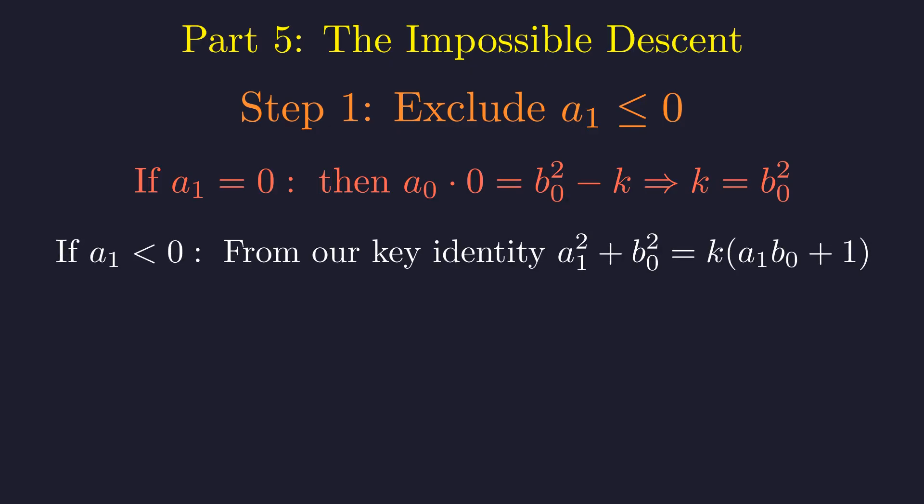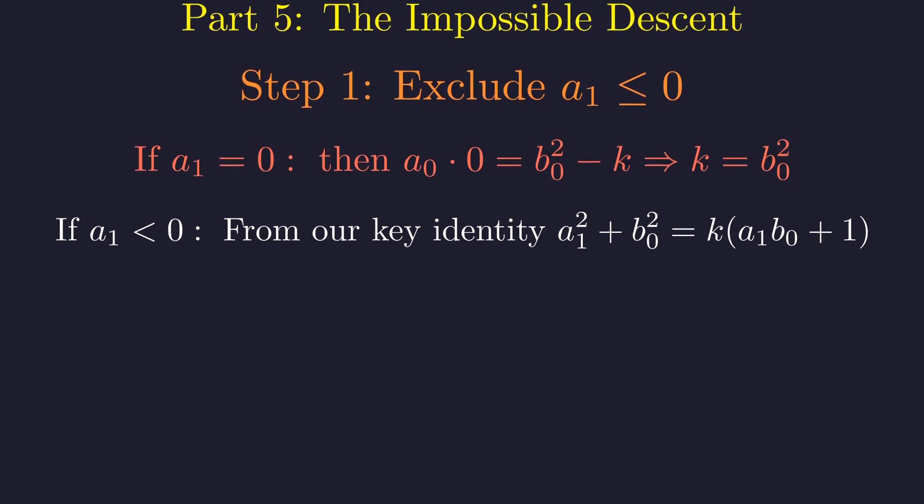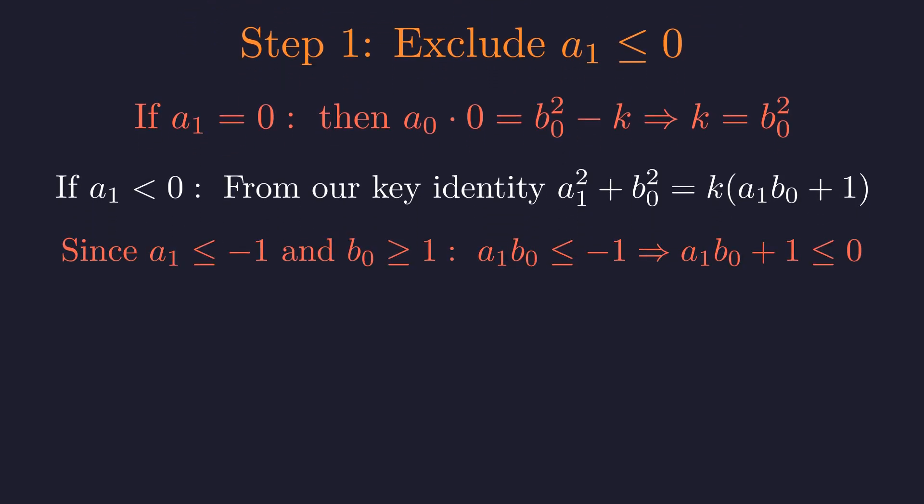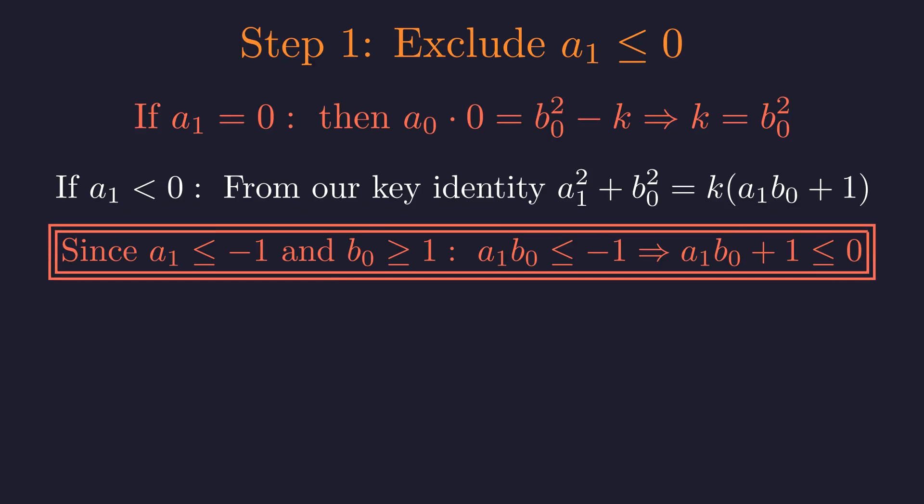If a1 is negative, let's examine our key identity: a1 squared plus b0 squared equals k times the quantity (a1 times b0 plus 1). Since a1 is at most negative 1 and b0 is at least positive 1, their product is at most negative 1. So a1 times b0 plus 1 is at most 0. But the left side of our identity is positive while k is positive, so the right side must be positive. This is impossible when the factor a1 times b0 plus 1 is non-positive.